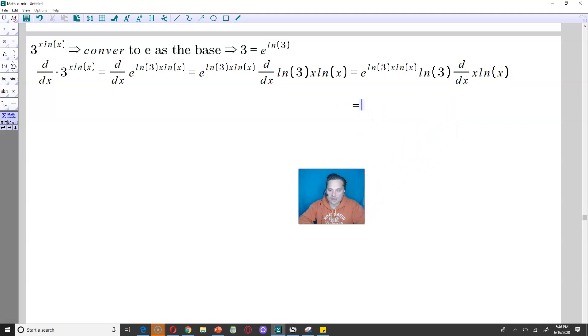So down below, I'm going to pick up as follows. I'm going to have e raised to the ln of 3 and then x ln of x. And for that derivative of x and ln x being multiplied, I'm going to use the product rule. So put a bracket in here. And I will type, the derivative of x is 1, and I copy ln of x.